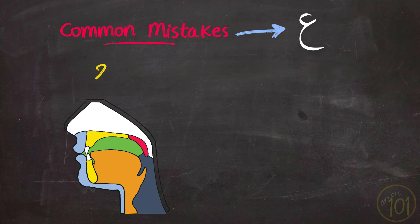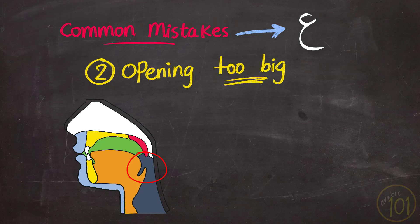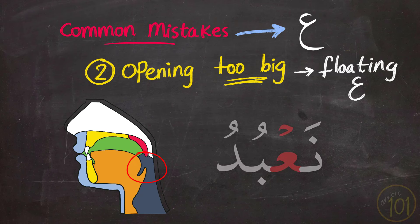The second mistake is leaving too big an opening between the wall of your throat and the epiglottis. Producing what we call in tajweed, a floating Ayn, which sounds like this. So this Ayn is closer to an Alif, rather than an actual Ayn, and this should also be avoided.